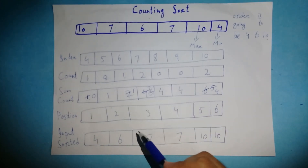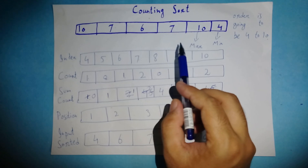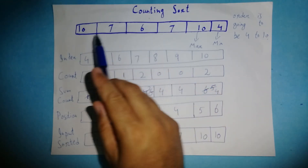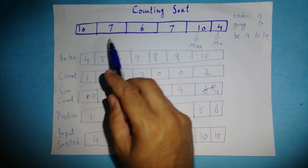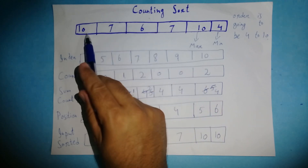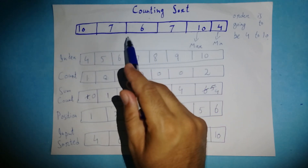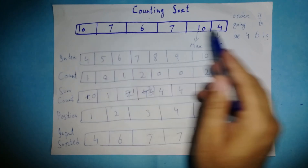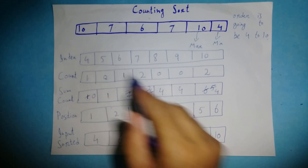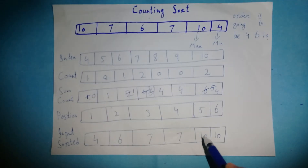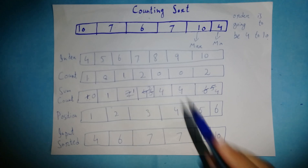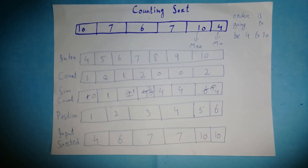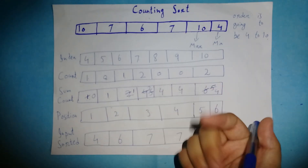That's how you can sort an array using counting sort. Remember, you can use this method even when values repeat again and again in the array — just follow the same procedure. I hope you understood how to sort an array, especially one with repeated values, using counting sort.